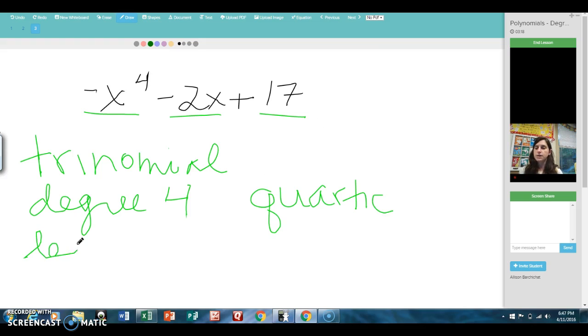The leading coefficient, that's the number in front of the biggest exponent, is negative 1. And the constant term is 17.